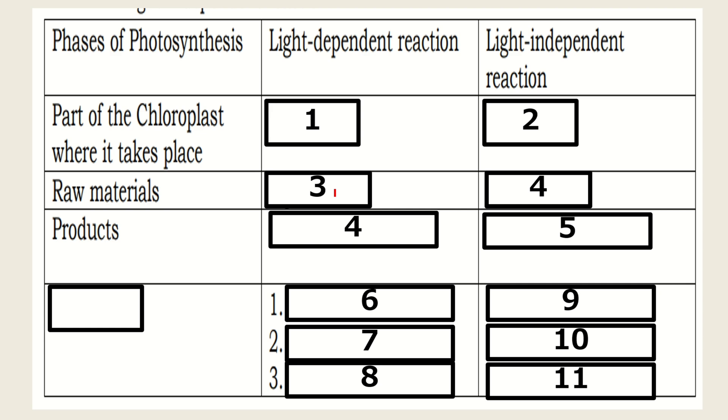Okay, so let's sum it up. The phases of photosynthesis. For the light-dependent reaction, it takes place in the thylakoid or thylakoid membrane. For the Calvin cycle or light-independent reaction, it occurs in the stroma.